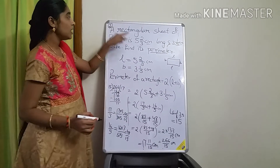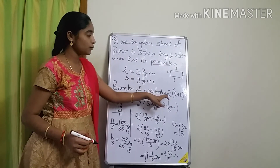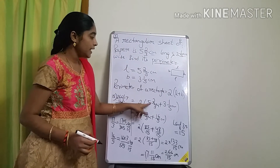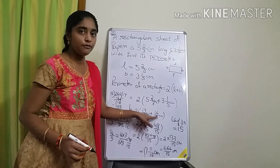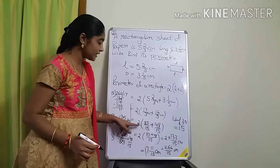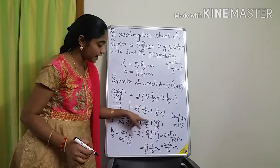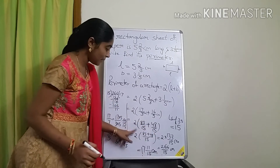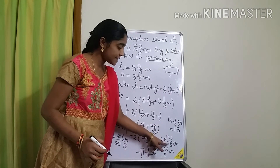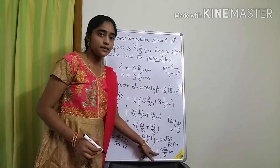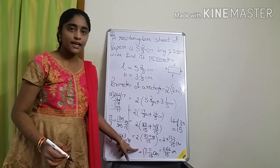To summarize: they gave length and breadth and asked for the perimeter. Use the formula 2×(length + breadth). Substitute the values, which are mixed fractions. Convert to improper fractions, find the LCM since denominators differ, make denominators the same, add numerators, then multiply by 2. If the result is an improper fraction, convert it to a mixed fraction for the final answer.